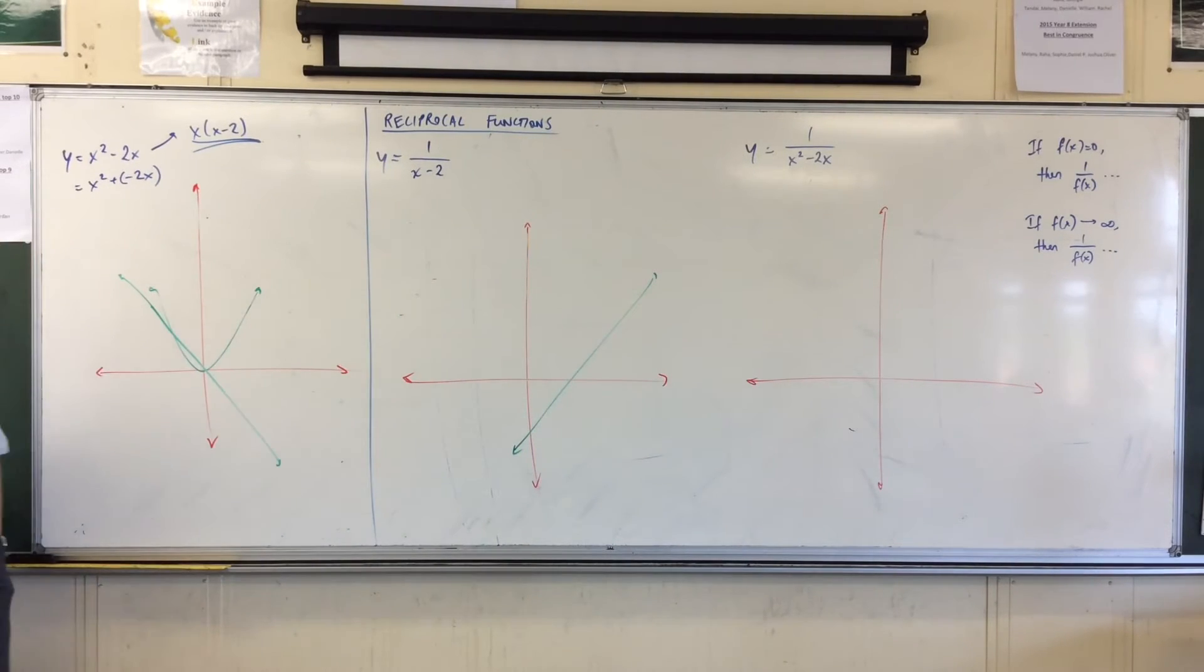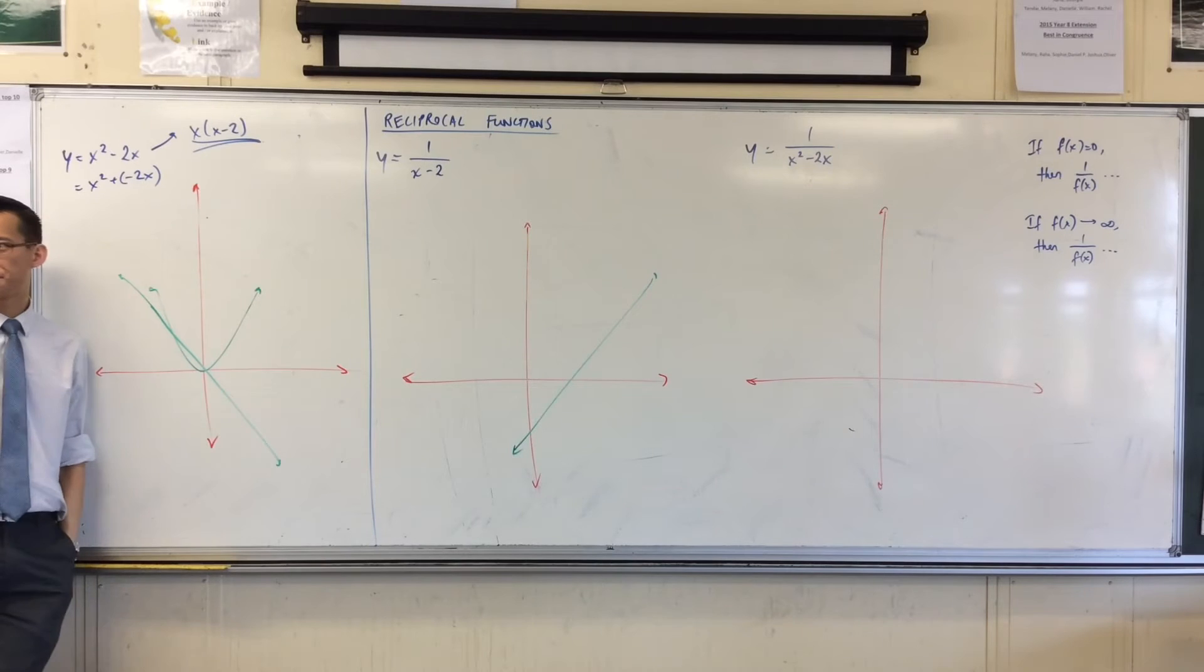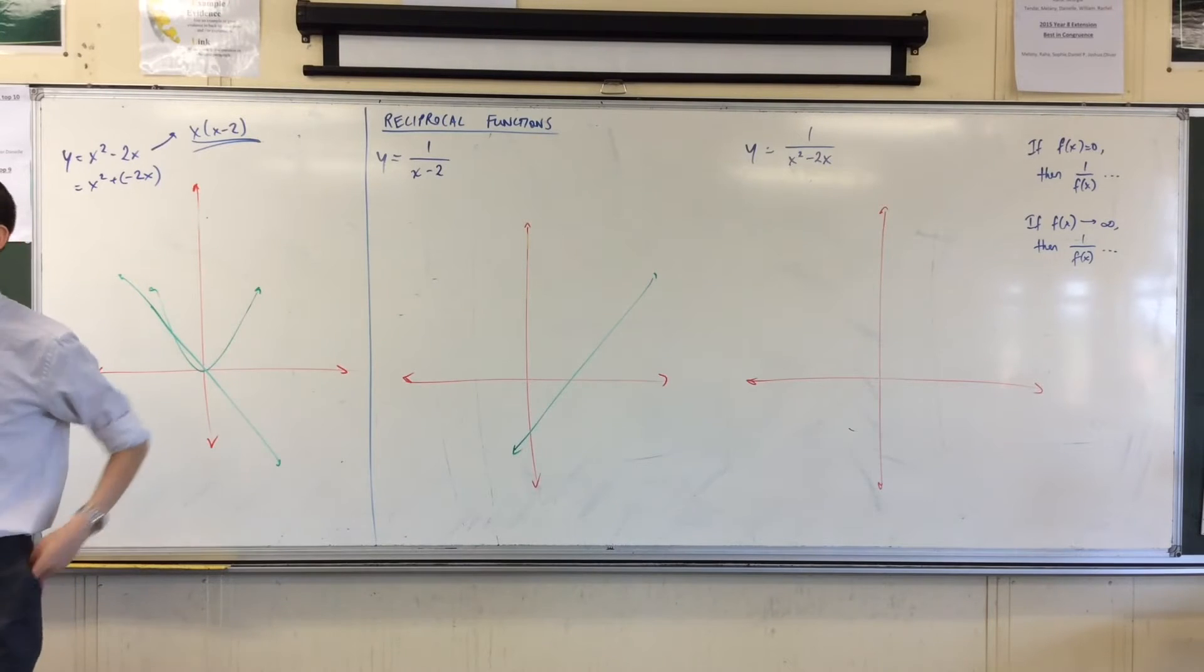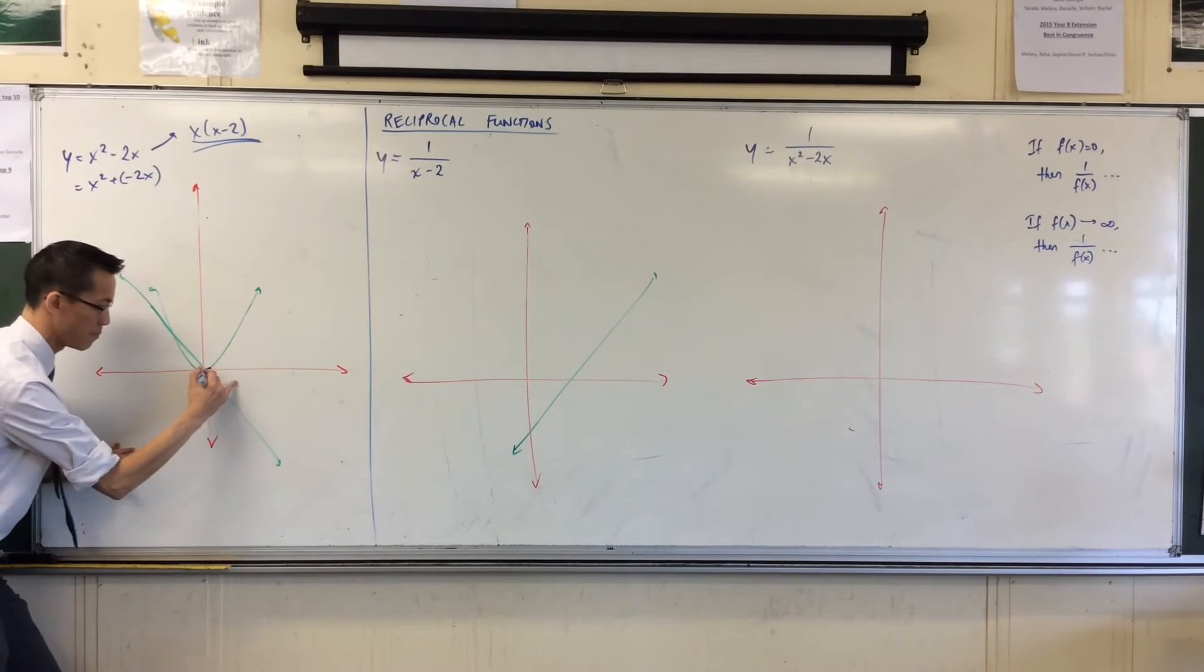Firstly, important points. What do you reckon is the most important point on here? I'd probably say the origin, right? Because at that point, both graphs are equal to zero. So when I add them together, the ordinate I get is zero. Bam.